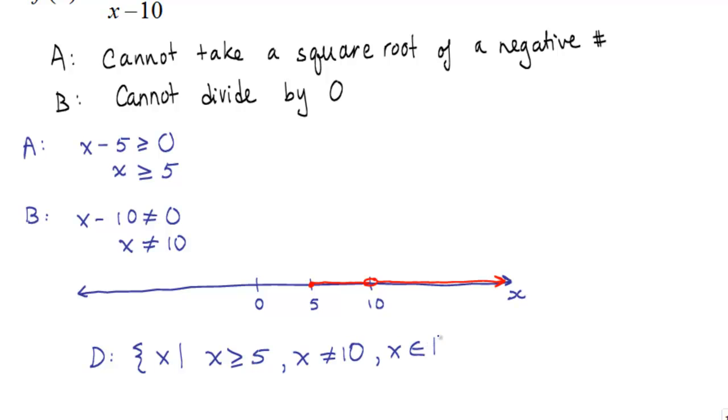And other than these restrictions, it exists for all real numbers. Or, in interval form, x will go from 5 to 10 but not touching 10. It's going to skip 10, and then it's going to go from 10 to infinity.